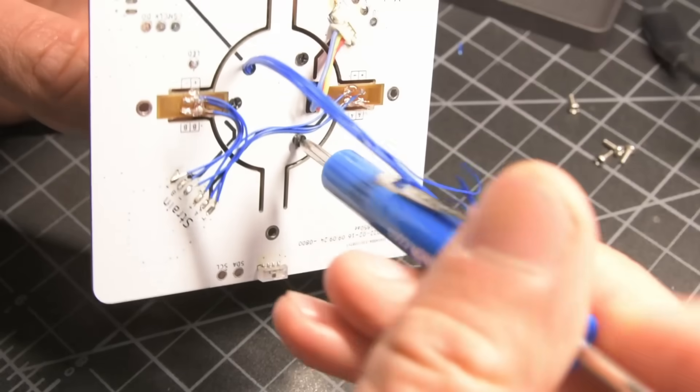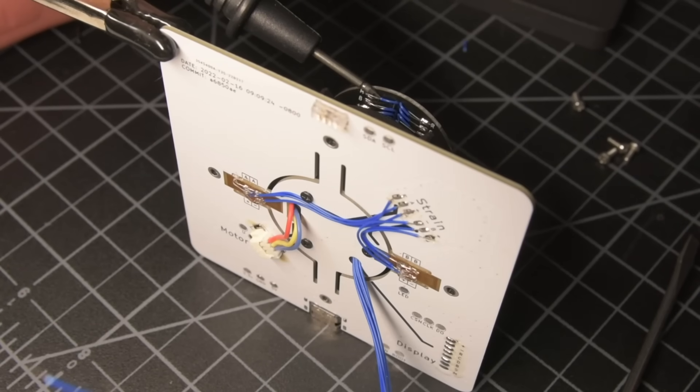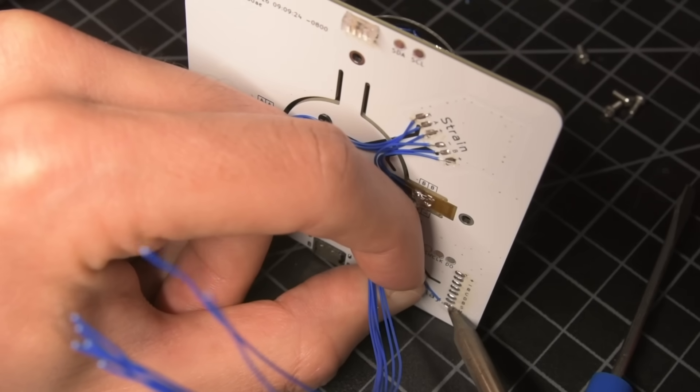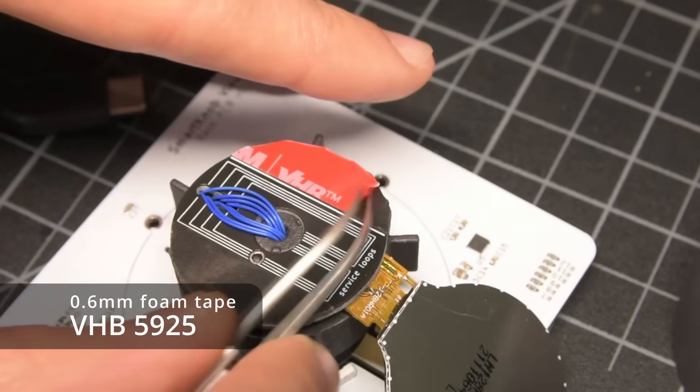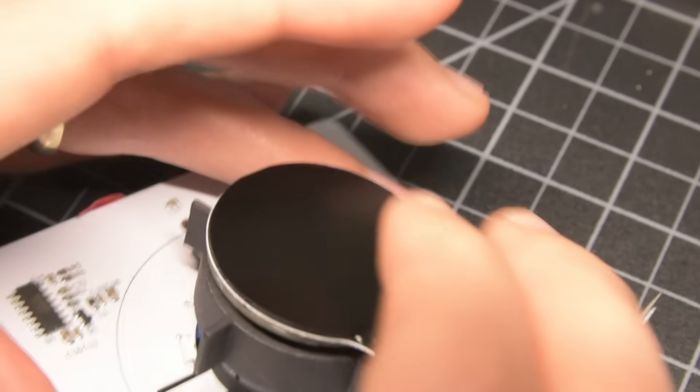Once all the wires were fed through and the motor was screwed into place, I used a multimeter in continuity mode to figure out which wire is which, before soldering them to the matching pads on the main PCB. Finally, I used thin VHB foam tape to permanently mount the LCD, and the knob just slides down over the top.